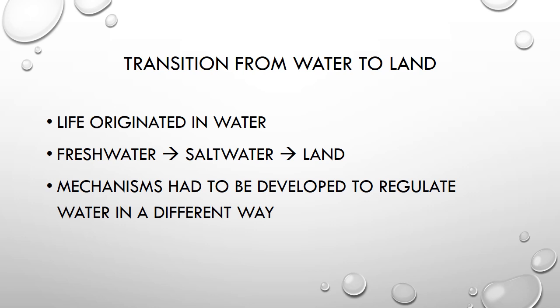Before we begin discussing the specifics of how terrestrial animals regulate water, we would like to remind you all that life on Earth began in water. Even today, water makes up about 70% of our planet. The transition from water to land was a major evolutionary step that has resulted in the success of many species of terrestrial animals. Life first made the transition from freshwater to saltwater, where organisms had to adapt mechanisms for optimal regulation. This happened yet again when life moved on to land.